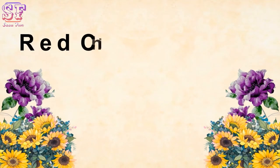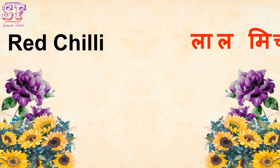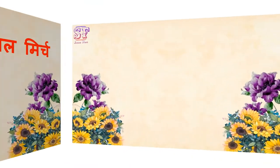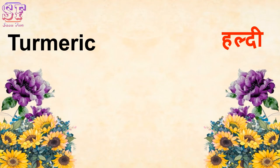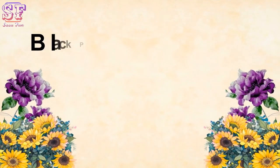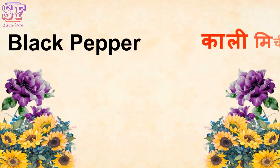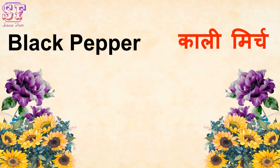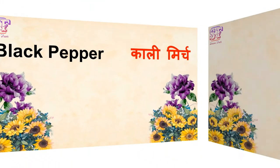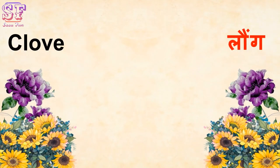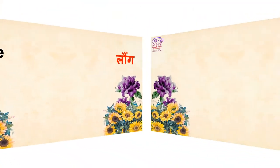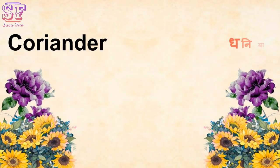Red Chili — Lal Mirch. Turmeric — Haldi. Black Pepper — Kali Mirch. Clove — Long.